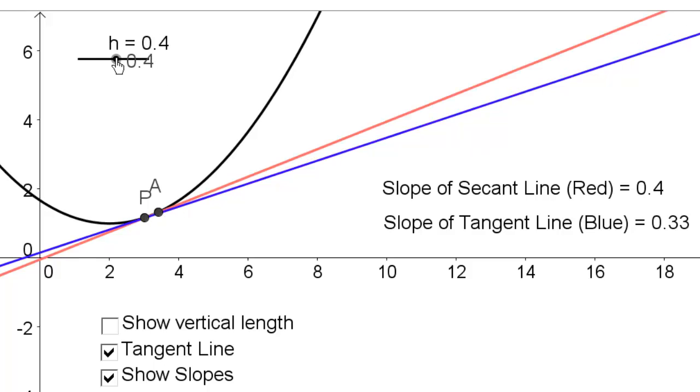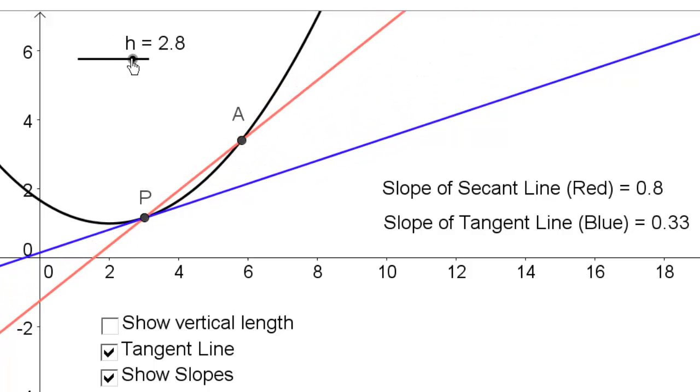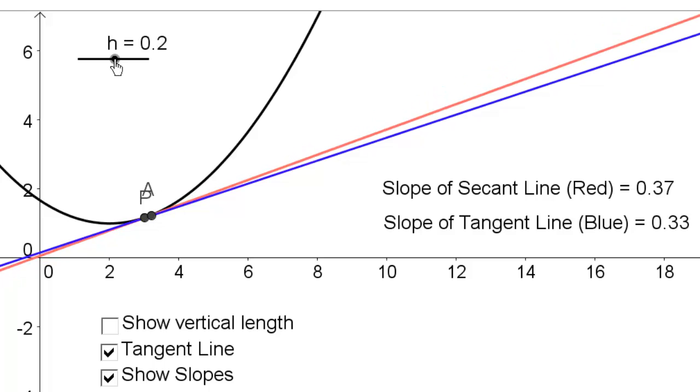I don't think I can get any closer than that, can I? No. Okay, so that's as close as I can get. So again, the limit of a secant line slopes is going to equal the slope at P.